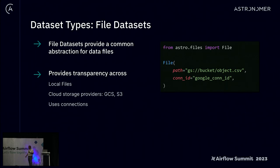The two concrete representations we'd like to propose are files — a logical abstraction on top of any file, whether local, in a GCS cloud bucket, an S3 bucket, or anything like that — providing a consistent abstraction for dealing with data files.